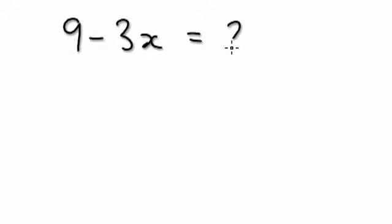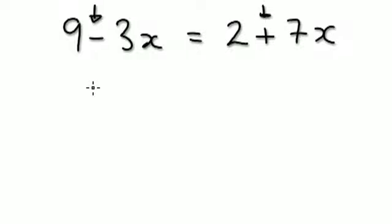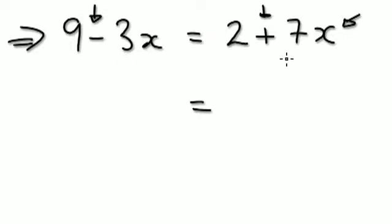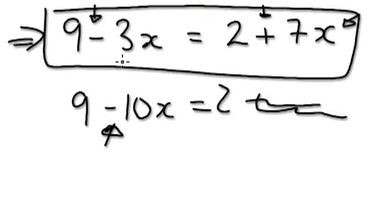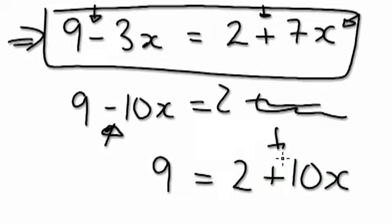If you're given a positive and a negative — for example, 9 minus 3x on this side equals 2 plus 7x — here you've got a negative and a positive. So in this case, do you add 3 bags or take away 7 bags to kill this thing off? It's better to add 3 bags to both sides. When you're given this, add 3 bags to both sides rather than take away 7 bags. Adding 3 bags gives you 9 equals 2 plus 10x. Now you can see it's a positive 10 bags.